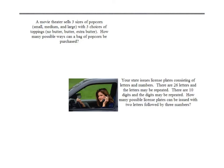Here are some other examples that you might run across. If you've got a movie theater that has three sizes of popcorn, three choices of topping, how many possible ways can a bag of popcorn be purchased? Well, we have three sizes of popcorn times three choices of butter. So there's basically nine different ways. This is really easy.